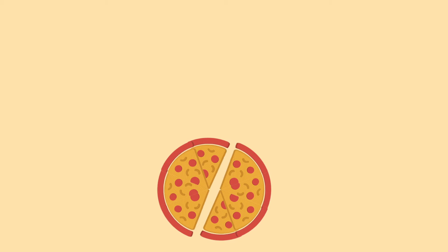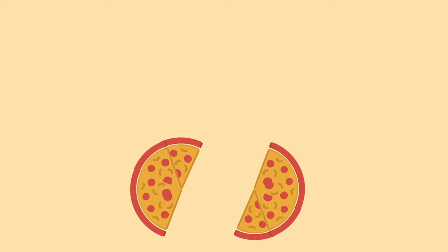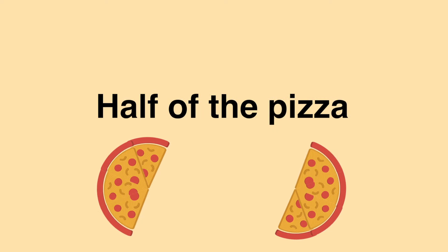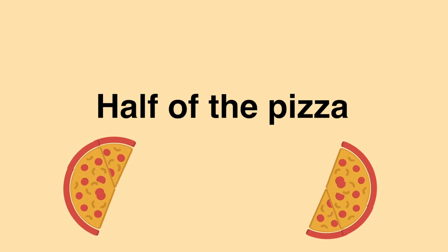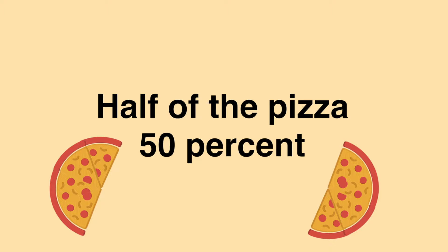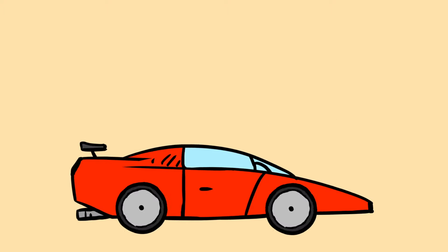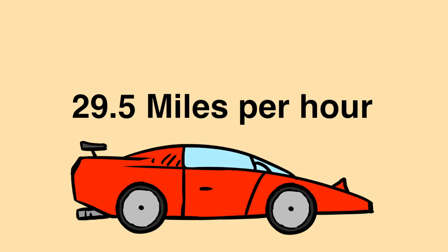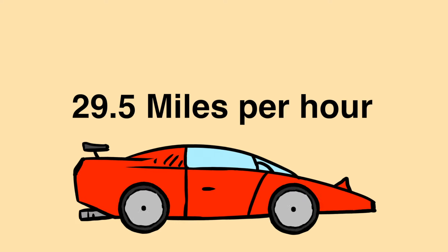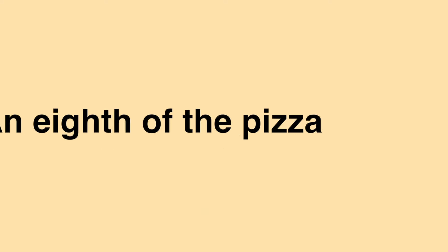So, to summarise. If I'm going to split a pizza with a friend, I will have half of the pizza, or 50 percent of the pizza. On the way to pick up the pizza, I'll drive at 29.5 miles per hour, just under the speed limit. I'll eat three slices for dinner and save an eighth of the pizza for lunch tomorrow.